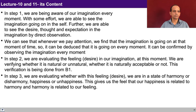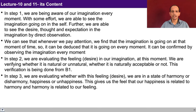In step one, we are being aware of our imagination every moment. With some effort, we are able to see the imagination going on in the self. Further, we are able to see the desire, thought and expectation in the imagination by direct observation. When you try to be aware of the imagination, you are able to see that there is a desire which is involved, thought which is involved, expectation which is involved. Desire essentially means something that you want to be. Thought is how to make it happen — how to be what you want to be. And expectation is that let it happen. We can see that whenever we pay attention, we find that the imagination is going on at that moment of time, so it can be deduced that it is going on every moment. This observation has to continue.